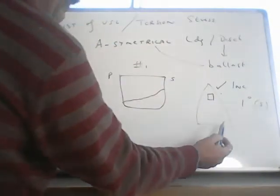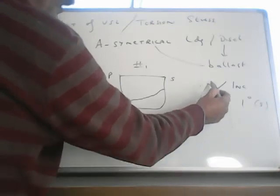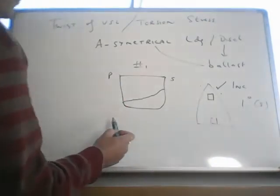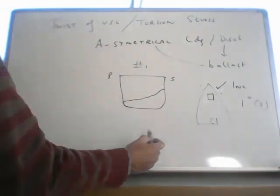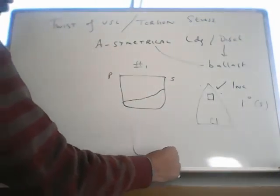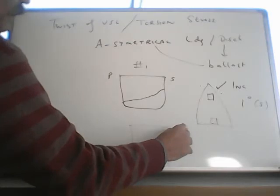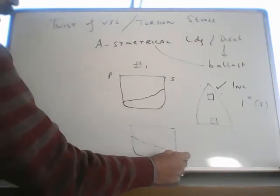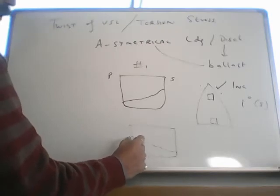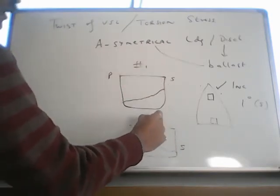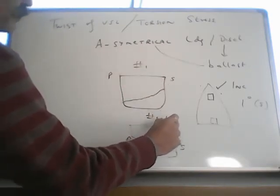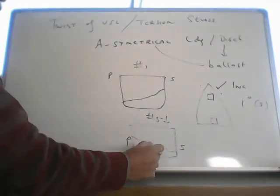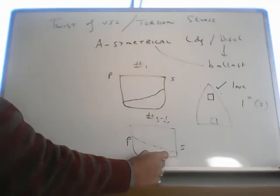Now to correct this list, if it is a 5 hatch ship, hatch 5 is here. To correct this list in hatch 5, if you load more in the port side. This is H1, this is H5. To correct this list, then this is also called asymmetrical loading.